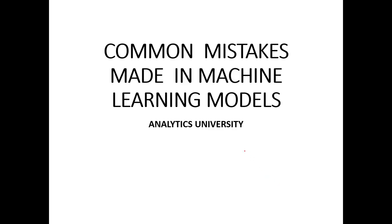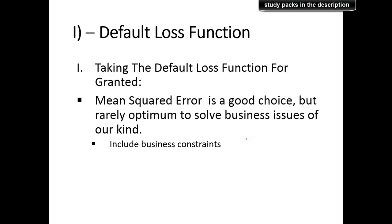In this video I'm going to be talking about some of the common mistakes people make while building machine learning models. The first one is taking for granted the default loss functions. Most of the times we take the loss functions to be granted and the popular one is the mean squared error, especially for regression type of problems.